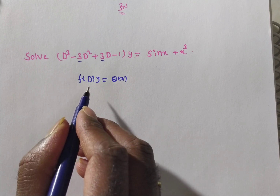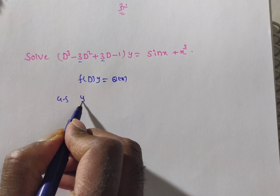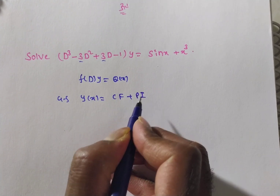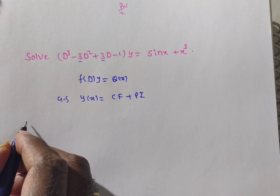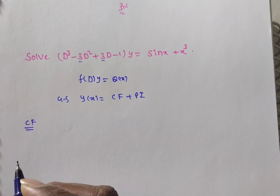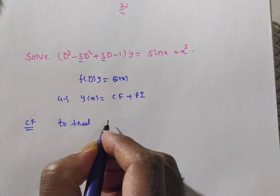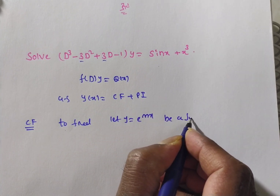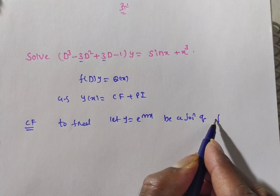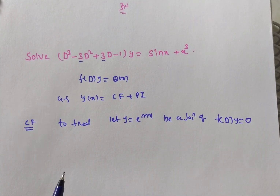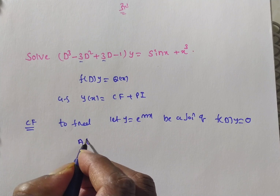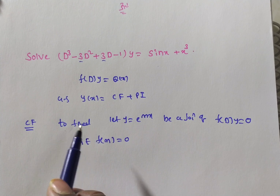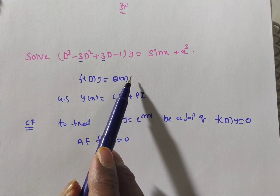The general solution for f(D)·y = Q(x) is y(x) = complementary function + particular integral. To find the complementary function, let y = e^(mx) be a solution of f(D)·y = 0. Then we get the auxiliary equation f(m) = 0.